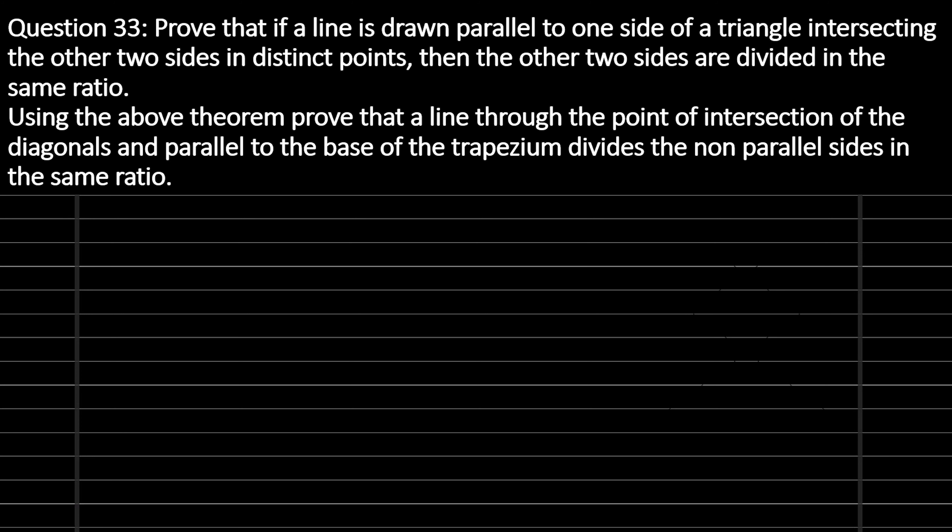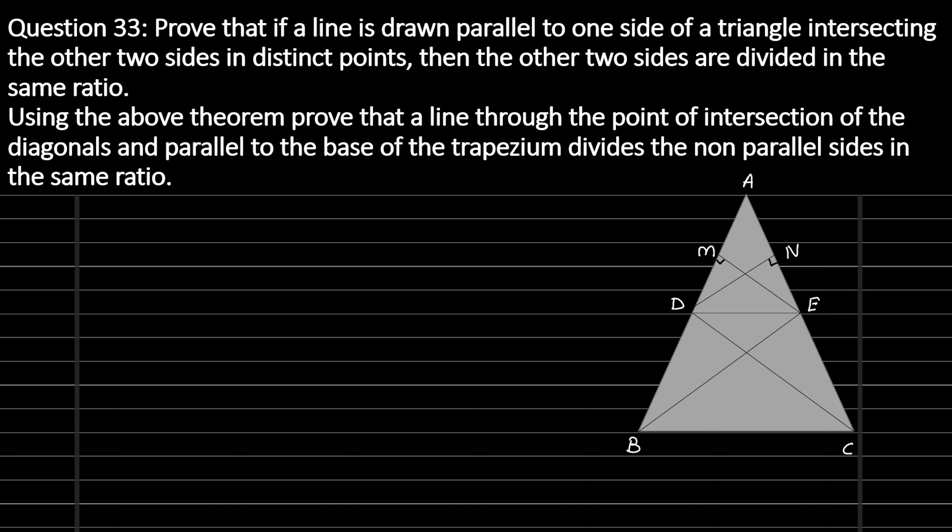Let's start solving question number 33: prove that if a line is drawn parallel to one side of a triangle, intersecting the other two sides in distinct points, then the other two sides are divided in the same ratio. Using the above theorem, prove that a line through the point of intersection of the diagonals and parallel to the base of the trapezium divides the non-parallel sides in the same ratio.